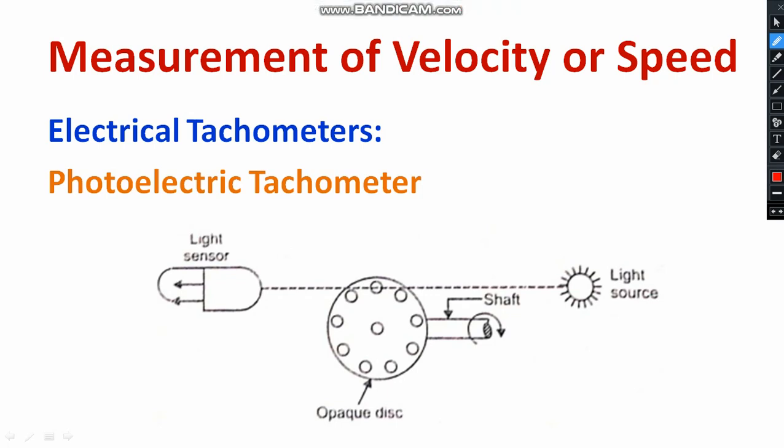There is a rotor connected to the shaft of the moving object, rotating in the clockwise direction. There is also a light source directly aligned with the opaque disk. Whenever the shaft rotates, the opaque disk also rotates, and light passes only through the holes. Next to the disk, a photo sensor is connected — you can use any kind of photo sensor. The photo sensor identifies the presence of light, and its output voltage is fed to a counter. With respect to the movement, the counting starts, and the speed of the shaft is measured in terms of the light sensor's electrical output.